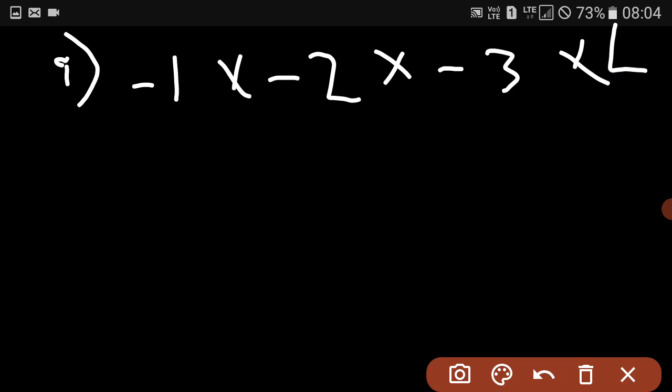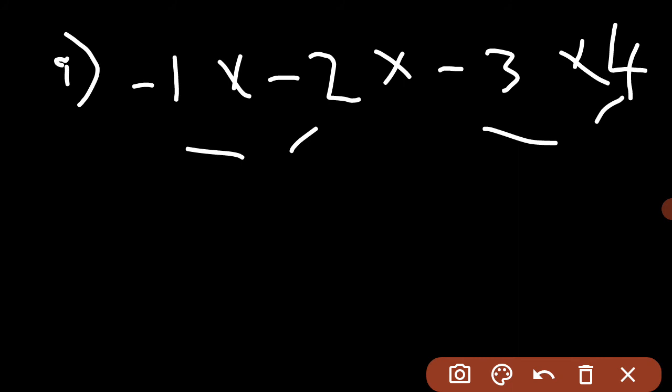Moving on to Part I. Part I says minus 1 into minus 2 into minus 3 into 4. If you multiply them, you get 2 into minus 12, so the answer is negative 24.